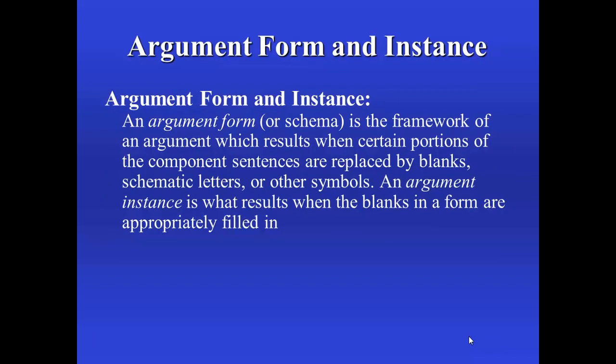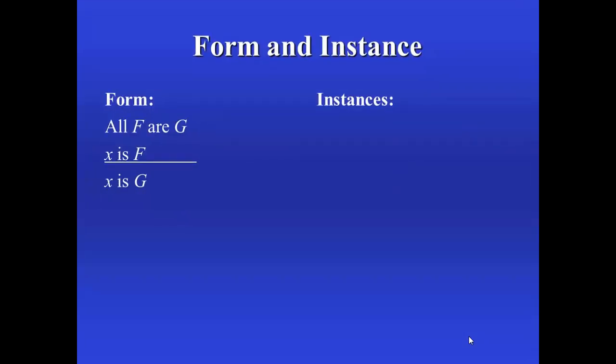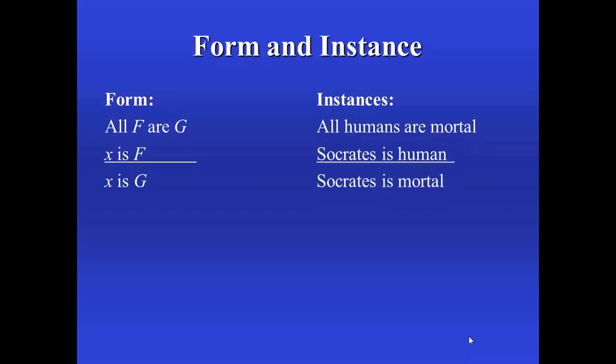Another notion of form — and this notion of form will be of utmost importance throughout the course — is that of form and instance. This is easier to illustrate than to say, so let me show you an example. Consider this abstracted argument: All F are G. X is F. Therefore, X is G. What do the F, X, and G stand for? Well, for F and G, we need some sort of noun phrase or category term, and X is holding the place of a name or proper noun. If we fill them in properly, putting the same thing in for F, G, and X each place they appear, we can get the argument that we've already been looking at. Put in humans for F, mortal for G, and Socrates for X, we get the argument on the right-hand side.